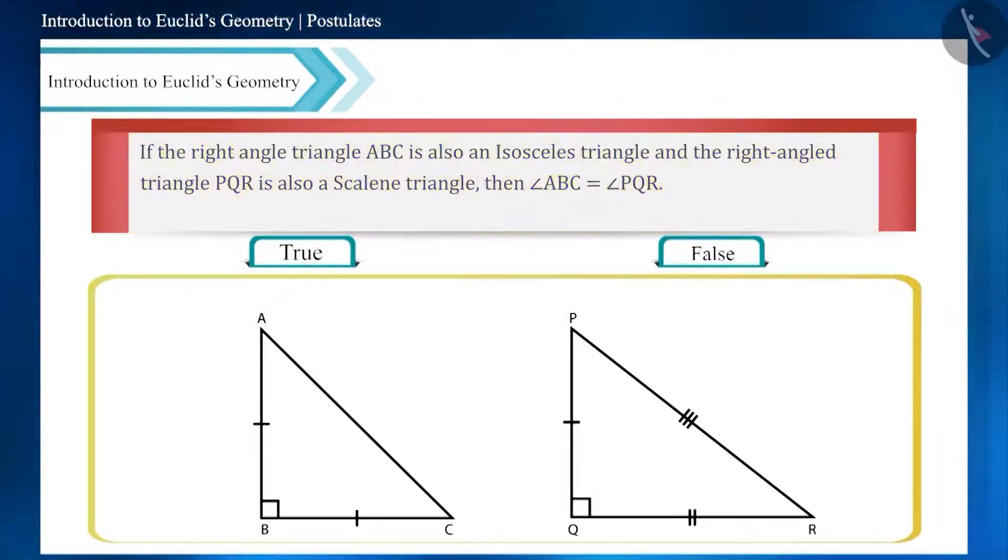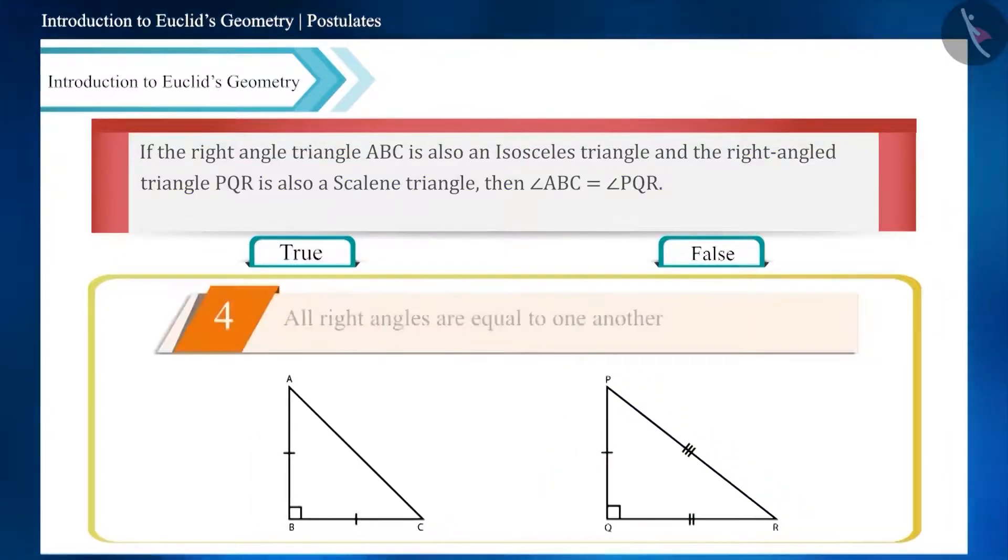Friends, look at this question carefully. Here the focus is not on the sides but on the angles. If you remember the fourth postulate of Euclid, two right angles are equal to one another. If you place these two triangles